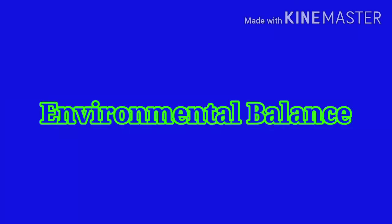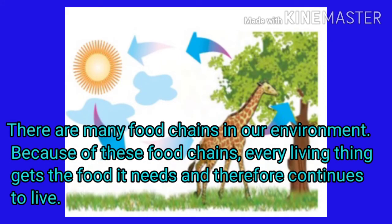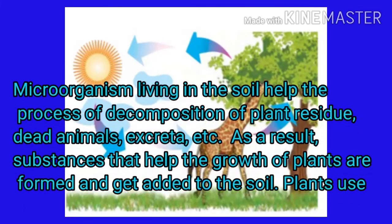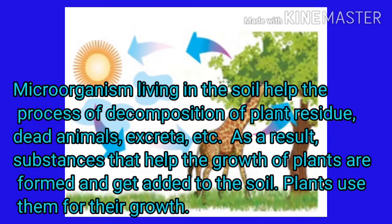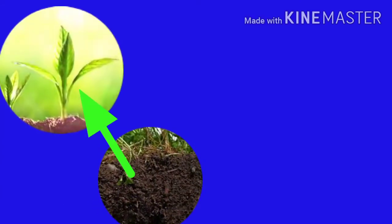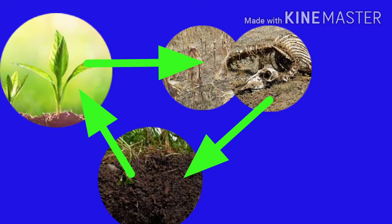Environmental balance. There are many food chains in our environment. Because of these food chains, every living thing gets the food it needs and therefore continues to live. Microorganisms living in the soil help the process of decomposition of plant residue, dead animals, excreta, etc. As a result, substances that help the growth of plants are formed and get added to the soil. Plants use them for their growth. Plants use substances in the soil for their growth, and when plants and animals die, the decomposition of their remains adds these substances to the soil once again. This is an important cycle in the environment.